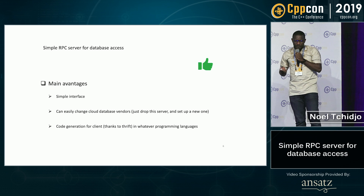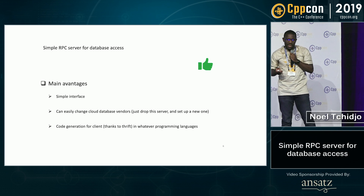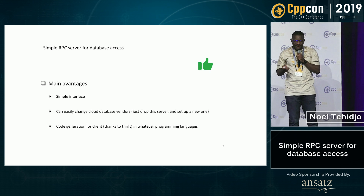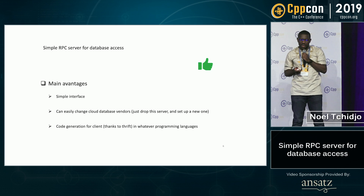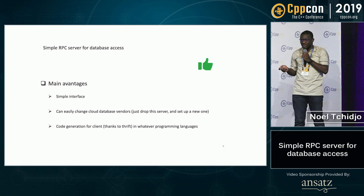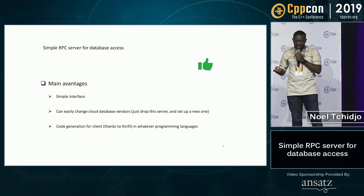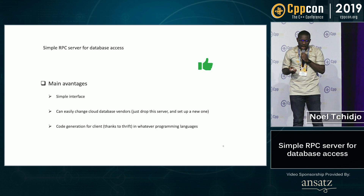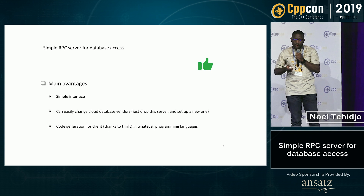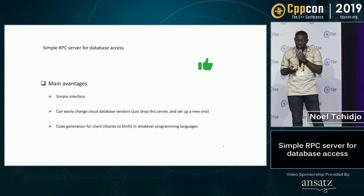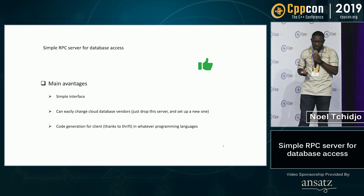The main advantages of this approach is that we have a very simple interface. We can decide to change our database vendor, and in that case we will just have to drop the server and develop a new one, with very few changes in our functional business code. Thanks to the code generation tool, if we decide to add a new service in JavaScript, for example, we can quickly generate a skeleton of the client.